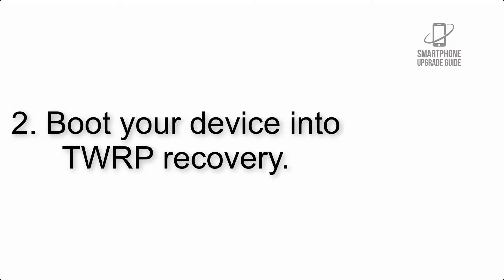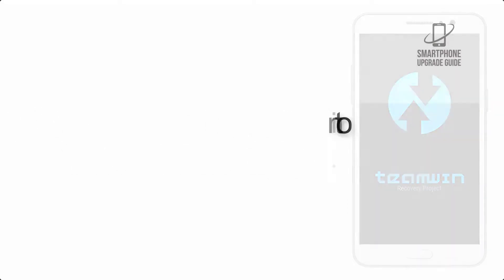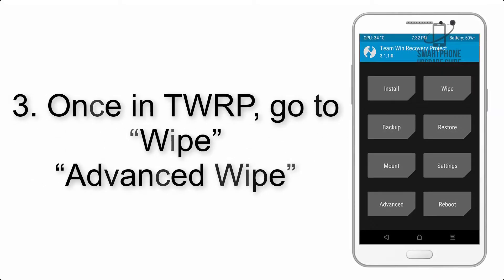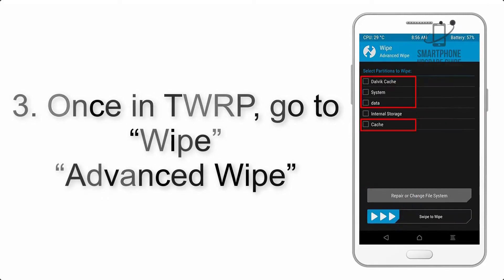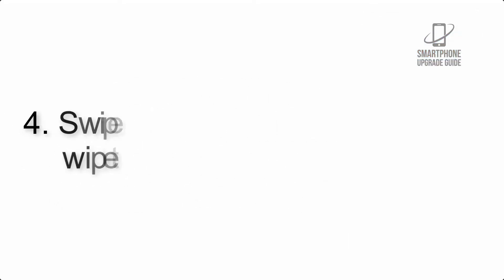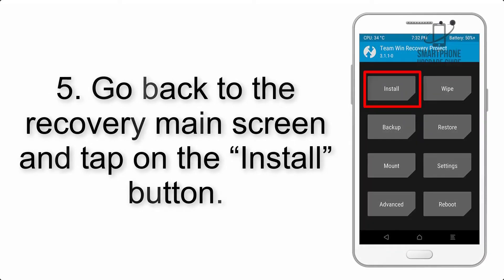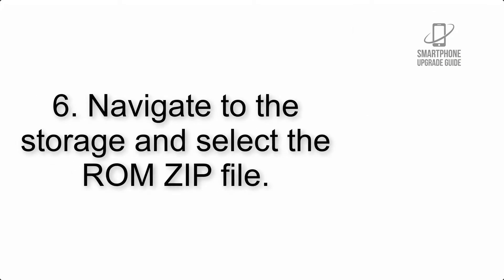Step 2: Boot your device into TWRP recovery. Once in TWRP, click on Wipe, then Advanced Wipe, and select the checkboxes as shown in the image, excluding internal storage. Step 4: Swipe the button to wipe the device. Step 5: Go back to the recovery main screen and tap on the Install button.